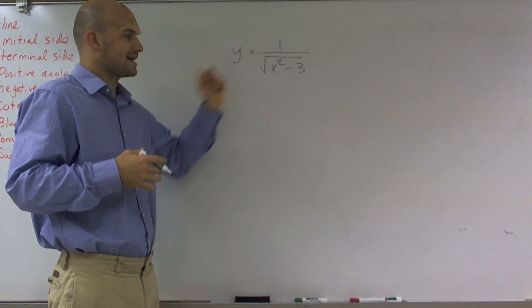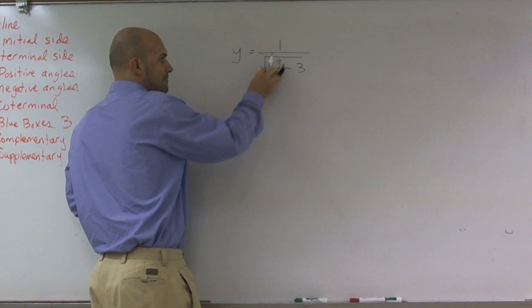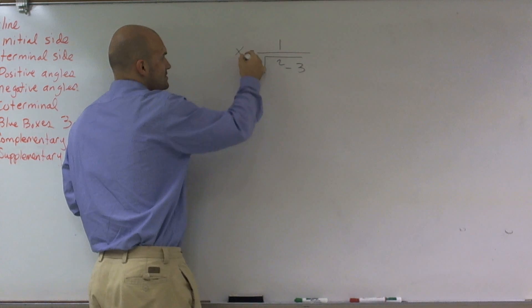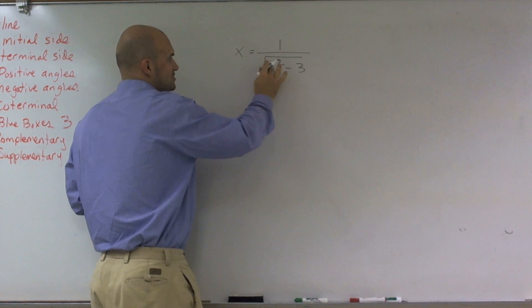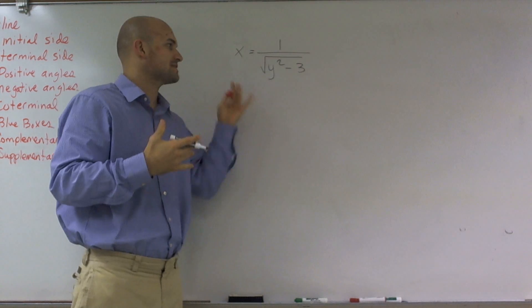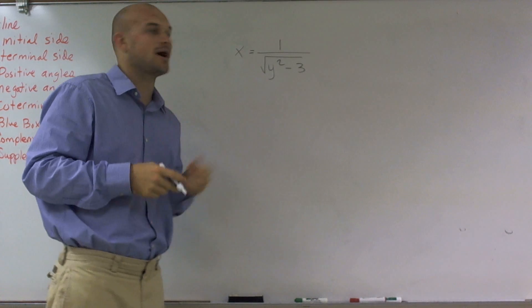So we have y and x. Now we're going to swap our y and x. The reason why we do that is because inverse functions have inverse operations. We're going to undo what was happening originally to this x. So what I need to do now is solve for y.